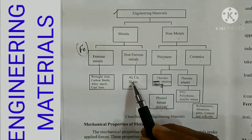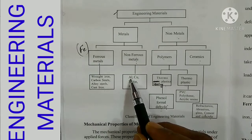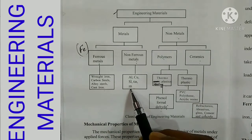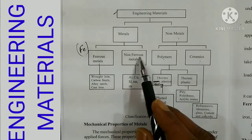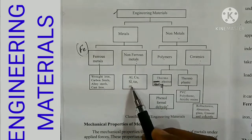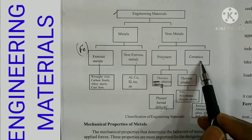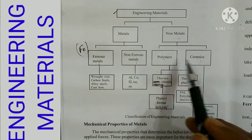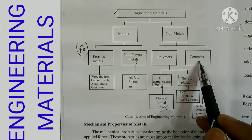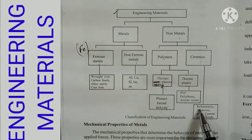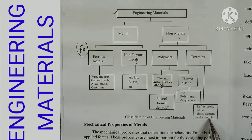Non-ferrous metals include aluminium, copper, silicon, tin, and zinc. Non-metals can be divided into two categories: polymers and ceramics. Polymers are plastics, and ceramics include tiles, refractive materials, abrasive materials, glass, cement, and concrete.